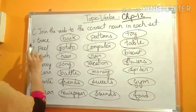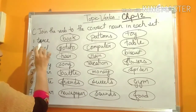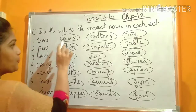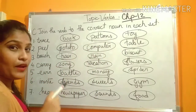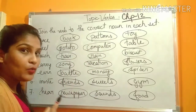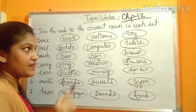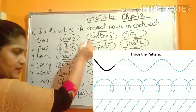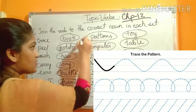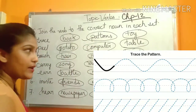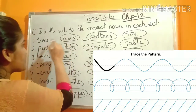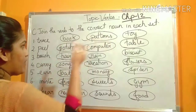Look at number one: Trace. Trace what? Book, patterns, or toy? Trace means when you mark the outline on a surface — that is patterns. So this will be the correct one. You cannot trace a book or a toy.